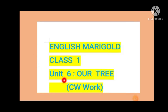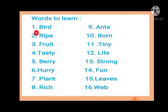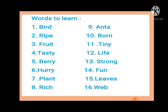In Unit 6, the next lesson is 'Our Tree.' We will do the revision of the classwork of this unit also in this video. Let's see the new words: bird, ripe, fruit, tasty, berry, hurry, plant, rich, ant, born, tiny, live, strong, fern, leaves, web. Students, learn the spelling of these words.